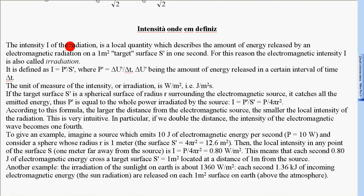The intensity I of the radiation is a local quantity which describes the amount of energy released by an electromagnetic radiation on a 1m² target surface S' in one second.